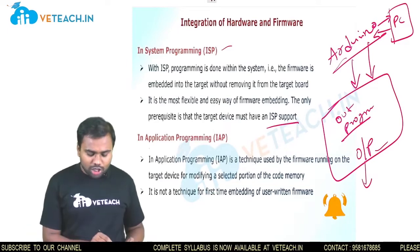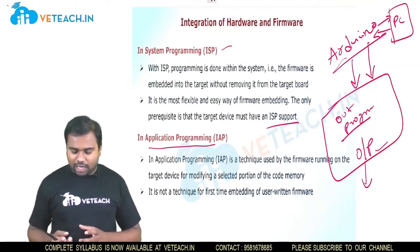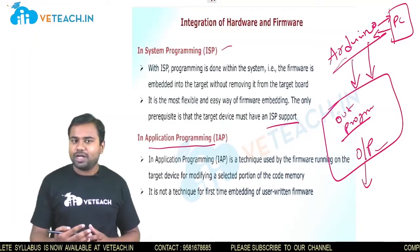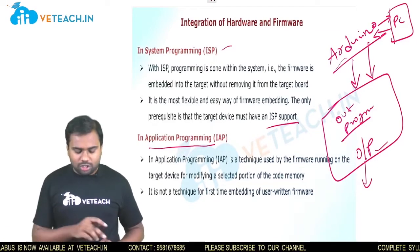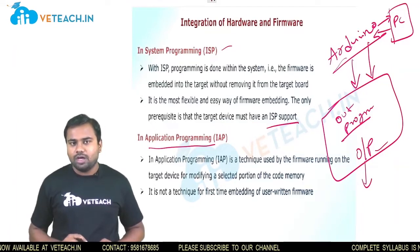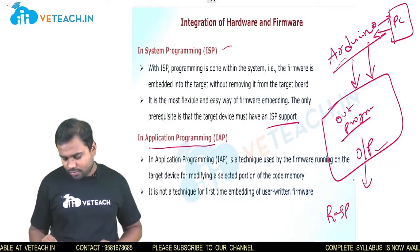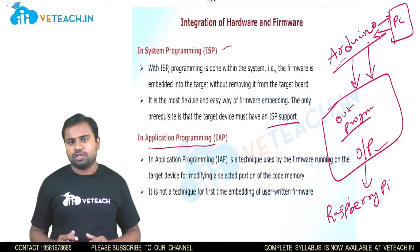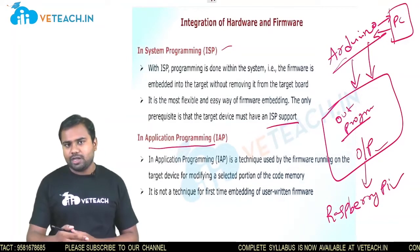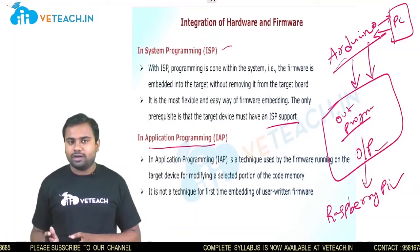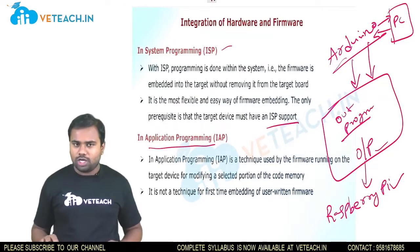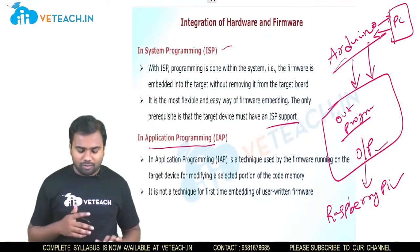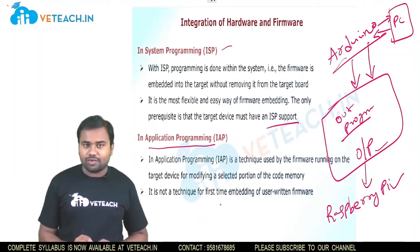In-application programming is a technique used by firmware running on the target, where you can modify a selected portion of the code memory while the application is running. For example, with a Raspberry Pi board using a GSM module to send messages, you can simply go into the program, change the phone number you want to send to, and save. This technique is not used for the first time embedding of firmware.